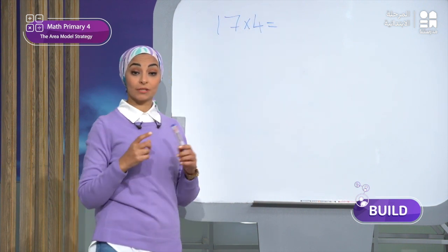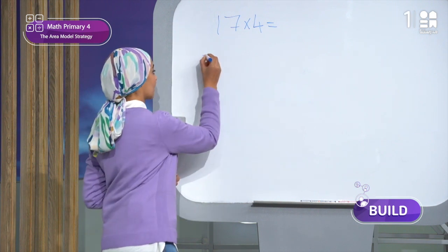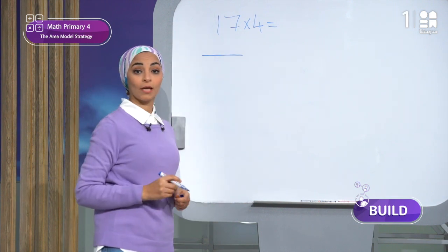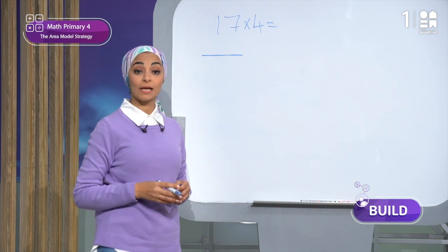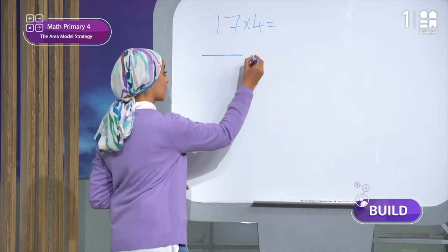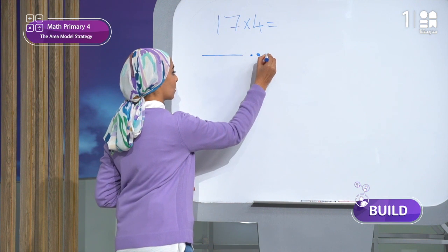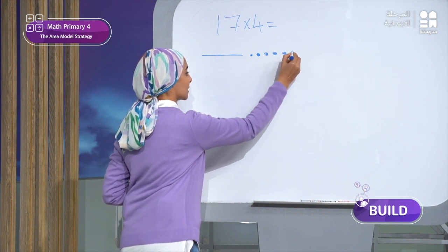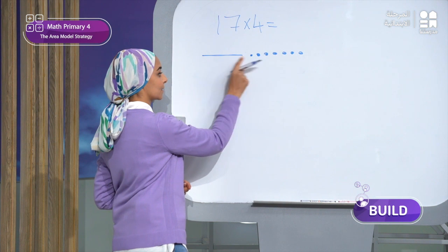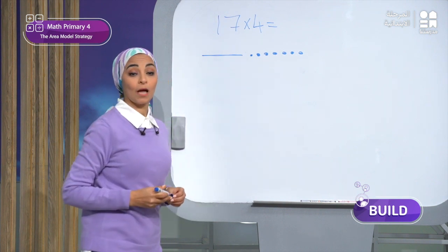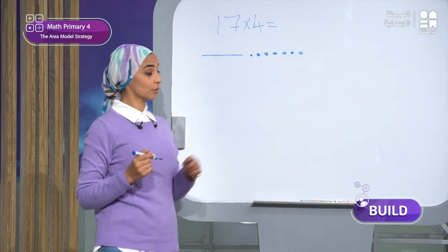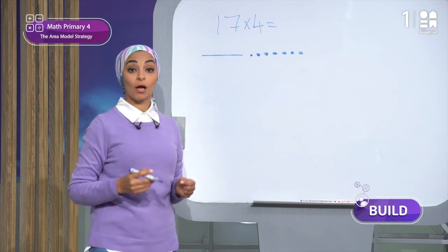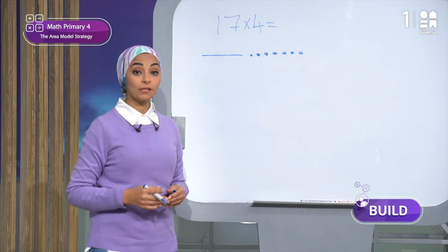I will represent the 10 by a long line, and draw 7 dots to represent the 7 ones. So here I have 10 and 7. We will put this in one row, and repeat the row 4 times, because it is times 4.